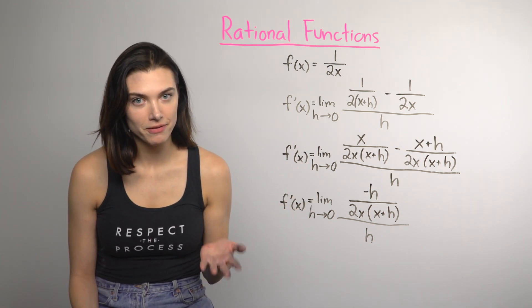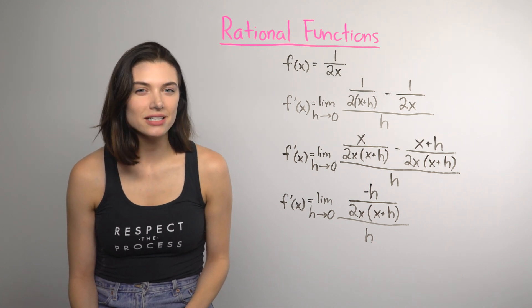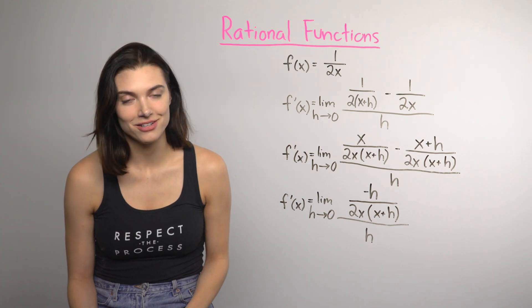Multiply by the reciprocal of the denominator. Again, if you start with a function that has a fraction, it's pretty likely you end up multiplying by the reciprocal to get rid of the h in the denominator at some point.